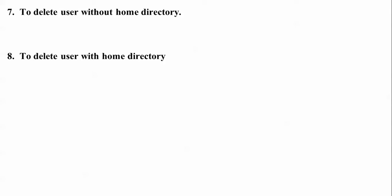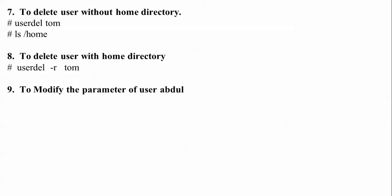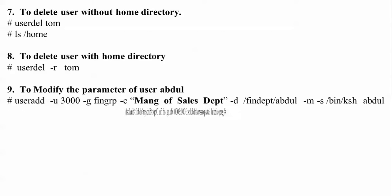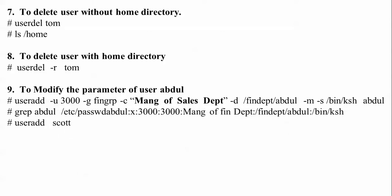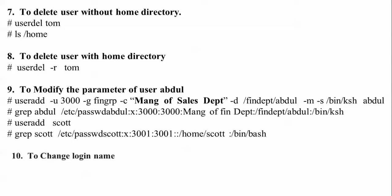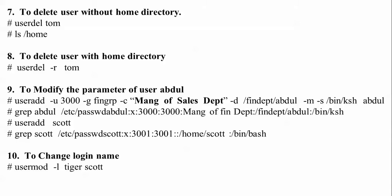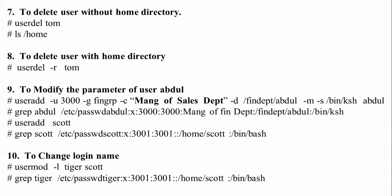Next is to delete a user. The seventh step is to delete a user without the home directory using: userdel tom. The eighth step is to delete a user with the home directory using: userdel -r tom. Then to modify the parameters of user Abdul, we use usermod. To change the login name, the command is: usermod -l tiger squad — where tiger is the old username and squad is the new one.